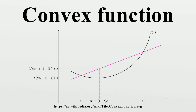If f and g are convex functions, then so is their sum. If f and g are convex functions and g is non-decreasing, then their composition is convex. As an example, if f is convex, then so is the exponential of f, because the exponential function is convex and monotonically increasing. If f is concave and g is convex and non-decreasing, then their composition is convex. Convexity is invariant under affine maps.